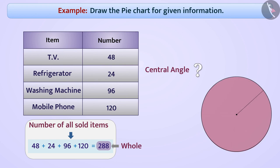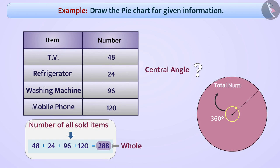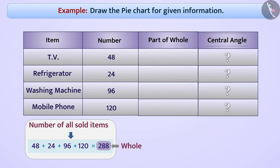Therefore, in the pie chart, an angle of 360 degrees at the center of the circle will represent the number 288. Now let's find the central angles representing the number of each object. The number of TVs sold is 48 divided by 288, part of the whole, that is, 1/6 part.